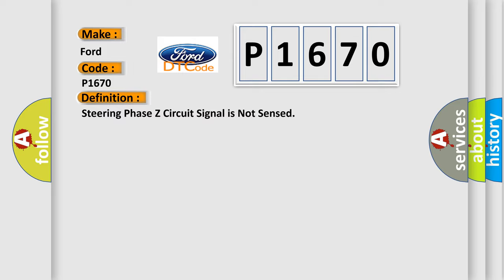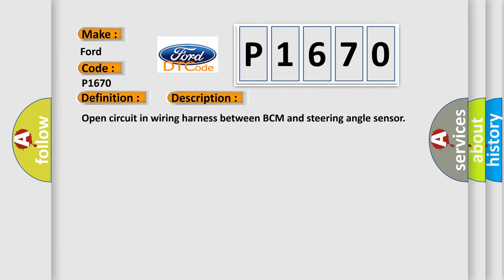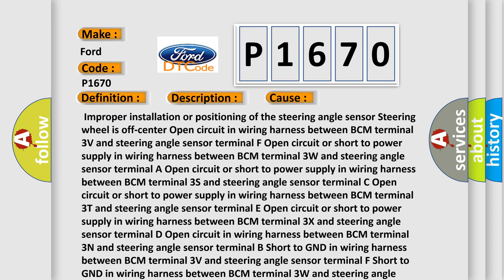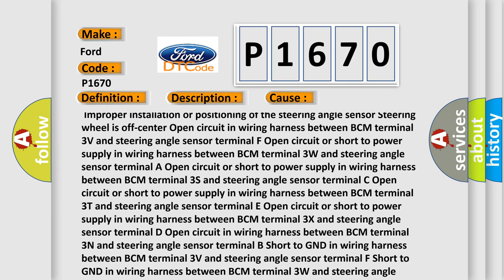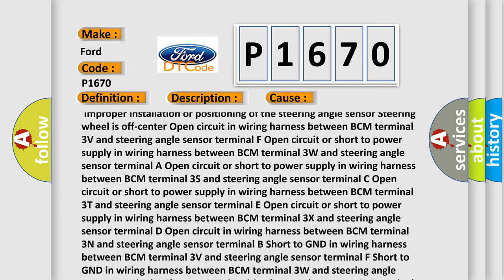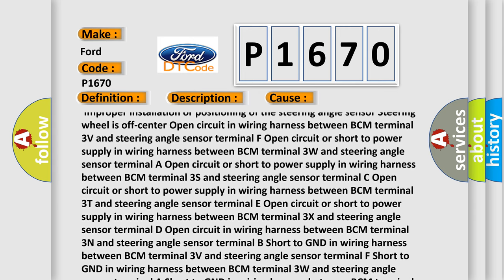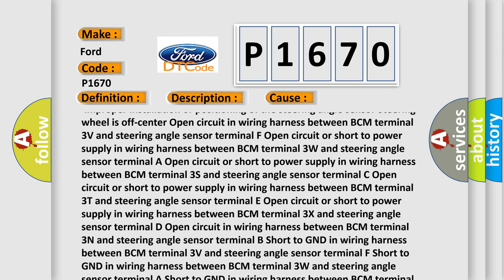Here is a short description of this DTC code. The error occurs due to an open circuit in the wiring harness between the BCM and the steering angle sensor. This diagnostic error occurs most often in these cases: improper installation or positioning of the steering angle sensor; steering wheel is off center; open circuit in wiring harness between BCM terminal 3V and steering angle sensor; terminal F open circuit or short to power supply in wiring harness between BCM terminal 3W and steering angle sensor.